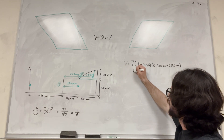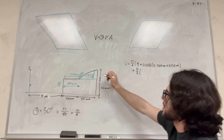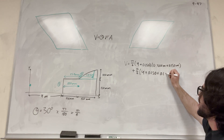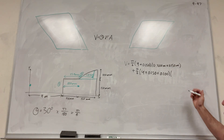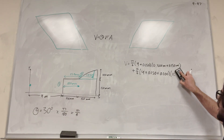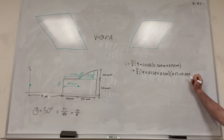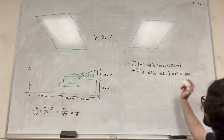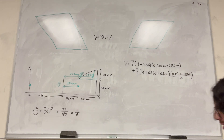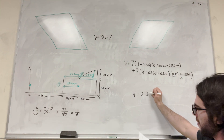We're just going to add this volume to the next one. So it's going to be plus pi over 6, and this radius is now 4 meters plus 0.15 meters plus 0.1 meters — that's our total radius. We multiply by the area of the triangle: 0.15 meters wide times 0.1 meters tall, divided by 2 because it's a triangle. Doing the math, the total volume is equal to 0.114 meters cubed.